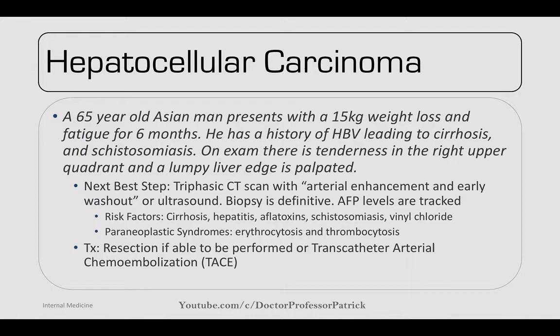Hepatocellular carcinoma — a 65-year-old Asian man with 15 kg weight loss, fatigue, history of hep B leading to cirrhosis, and schistosomiasis. Exam: tenderness in RUQ, lumpy liver edge. Next best step: triphasic CT showing arterial enhancement and early washout. Ultrasound for screening; biopsy is definitive; AFP tracks progression. Risk factors: cirrhosis, hepatitis, aflatoxins, schistosomiasis, vinyl chloride. Causes paraneoplastic syndrome (erythrocytosis, thrombocytosis). Treatment: resection if possible; or TACE procedure (transcatheter arterial chemoembolization).